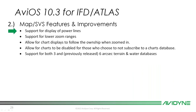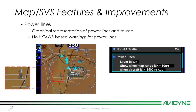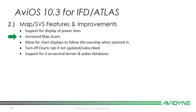Moving into map and SVS features and improvements: we added the power line database. We can now show power lines and towers graphically on the map. We can toggle that layer on or off in the setup menu, control when it appears as you zoom in on the map, and filter that layer based on AGL height of the aircraft.